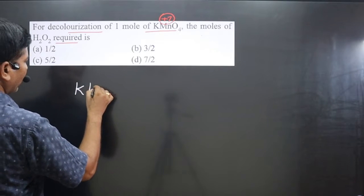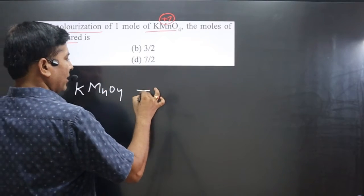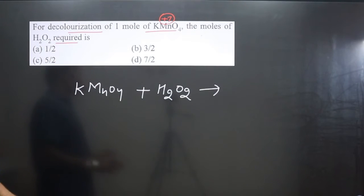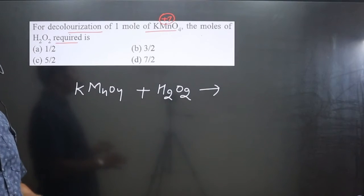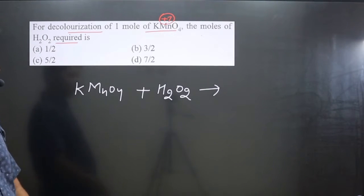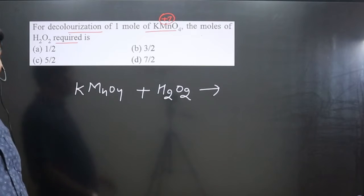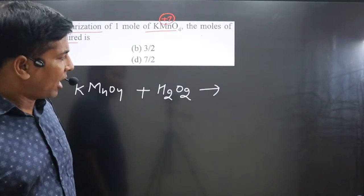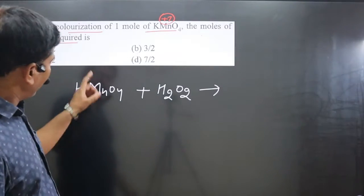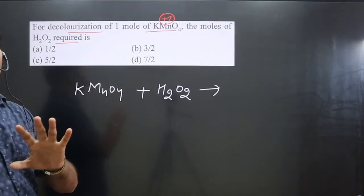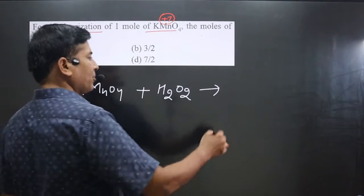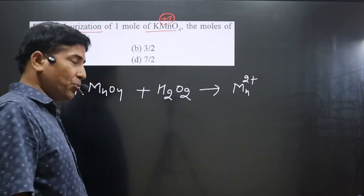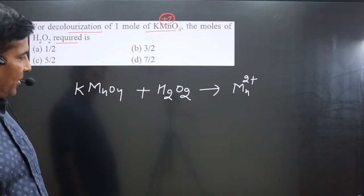We write down the chemical reaction: KMnO₄ reacting with H₂O₂. Pay attention — the medium is not given, and when the medium is not specified for KMnO₄, we always assume the reaction takes place in acidic medium. KMnO₄ can participate in acidic, basic, or neutral medium, and the electron transfer differs accordingly. Assuming acidic medium, KMnO₄ always converts to Mn²⁺.